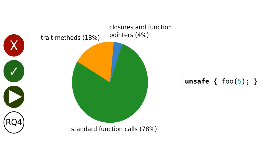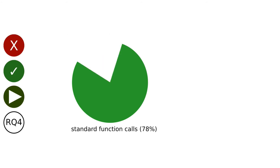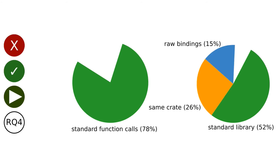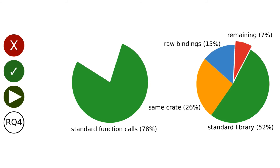The remaining 78% are standard function calls. Looking deeper into them: 52% target functions from the standard library, 26% target functions from the same crate, 15% come from crates that provide raw C bindings, and only 7% target functions defined in other crates. To sum up, it seems that most unsafe blocks are self-contained.